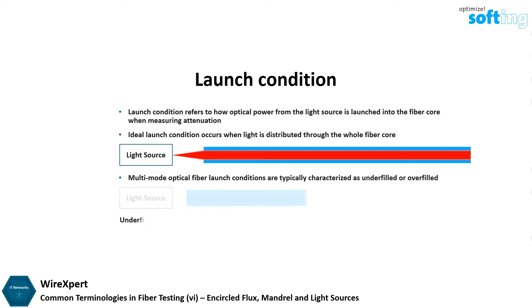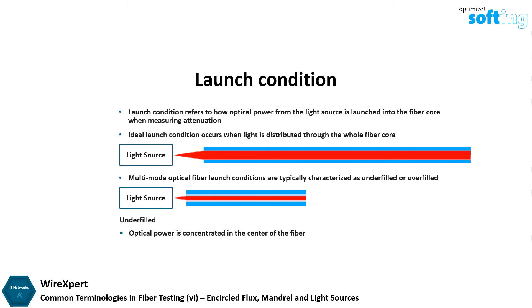An underfilled launch condition occurs when most of the optical power is concentrated in the center of the fiber and the angular distribution is smaller than the fiber core. For example, when the light source is a laser or a vertical cavity surface emitting laser, or VCSEL.